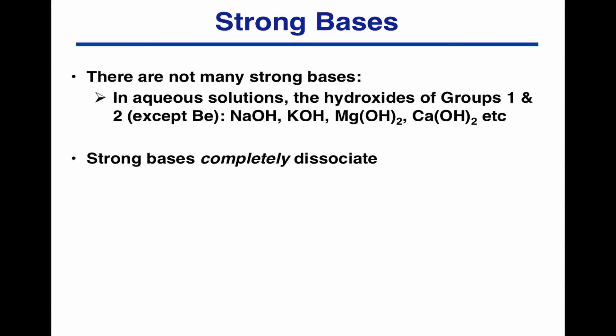So we have a bottle that says 0.1 molar sodium hydroxide, 0.1 molar NaOH. We know that that would have completely split up into sodium ions and OH minus ions. So if the bottle says 0.1 molar NaOH, then we have a 0.1 molar OH minus concentration.